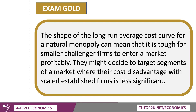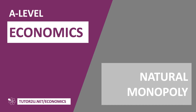The shape of the long-run average cost curve we've just been through can mean it's really hard for smaller, so-called challenger firms to enter a market profitably. They can still enter, but they won't have the benefits of the scale economies that the big firms have. So they may well decide to target segments of a market where the cost disadvantage is not significant — for example, the final mile selling to the consumer or some premium product in the market. The natural monopoly diagram is a key one, so please use that kind of shape of cost curve.